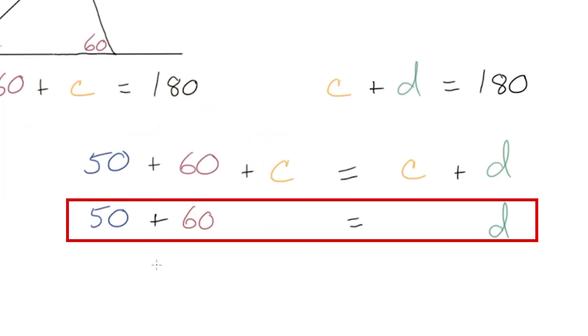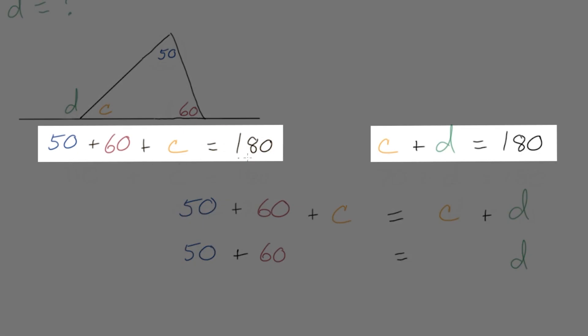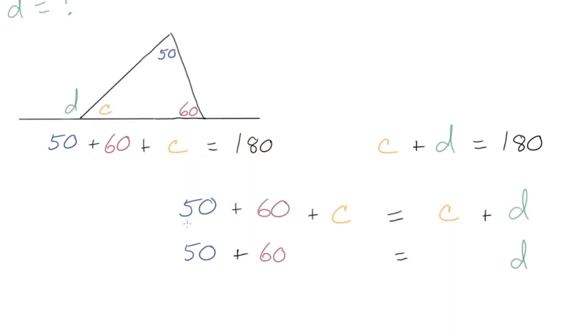So this is really the intuition for why this is always true. The interior angles of our triangle will always sum to 180, and our exterior angle and its adjacent interior angle will also sum to that same thing, 180. Both of these equations are true at the same time and they overlap, so that means that the parts that don't overlap are equal to each other. And in our case here, it's 50 plus 60 equals D, and we figured out that D is 110.